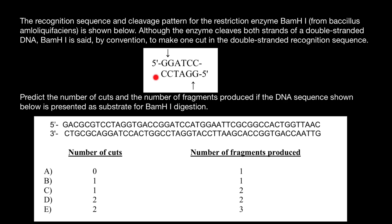First, let's talk about the recognition site for this restriction enzyme. Here is a sequence which we call a palindromic sequence. What is a palindromic sequence? Take a look — we have a five prime end here, and let's also add a three prime end here, and we also have a three prime end on the other strand.